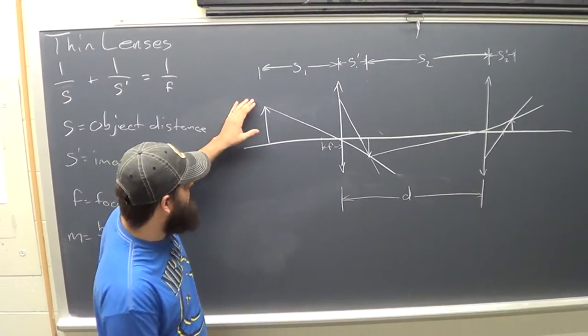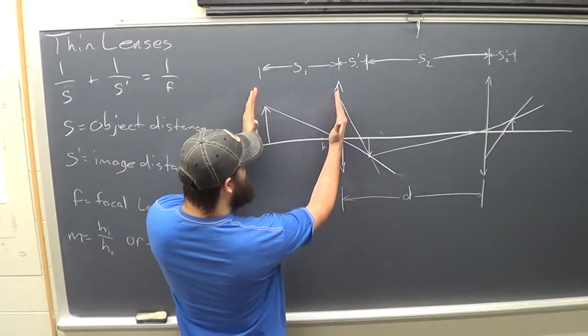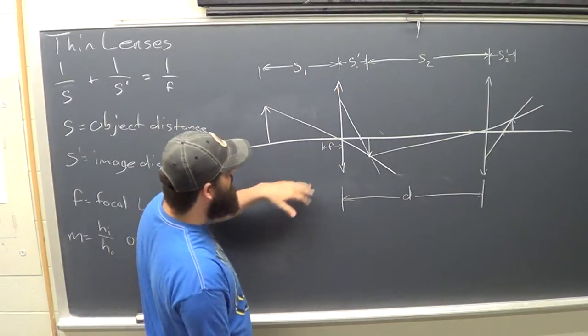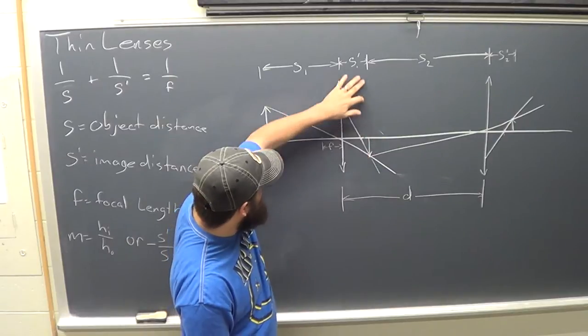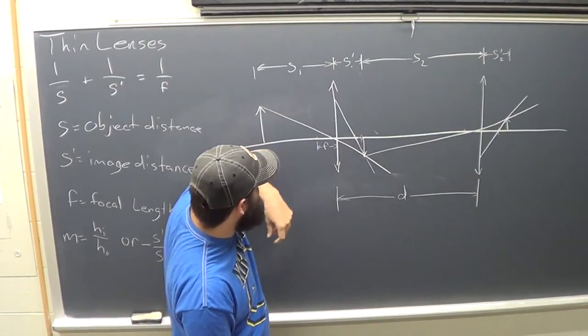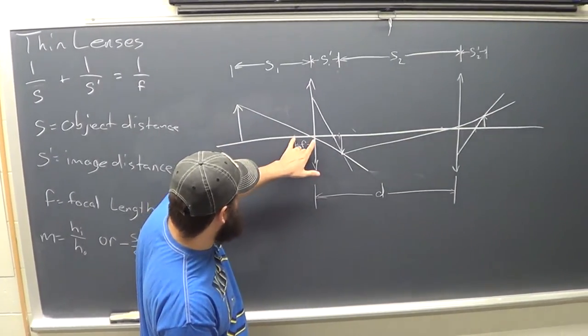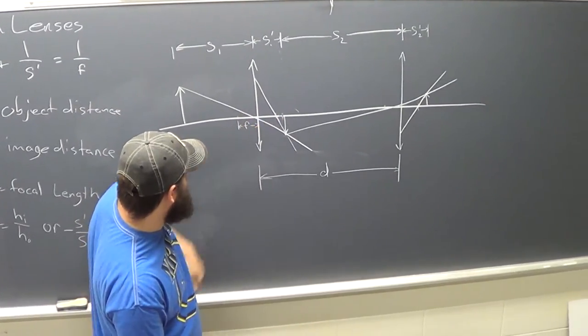Here we have the object, the distance S1 from the lens, which will create an image right here at a distance S1 prime from the lens. The focal length is right there.